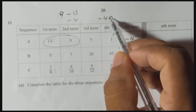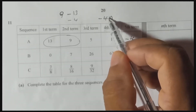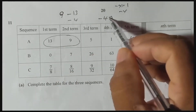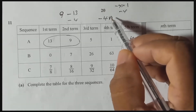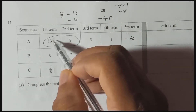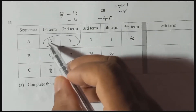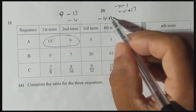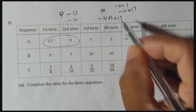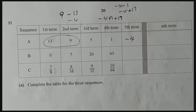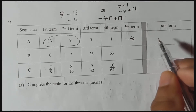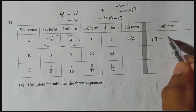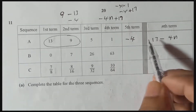We write the common difference with n, that means minus 4n. Replace n with 1: minus 4 times 1 is minus 4. Now, minus 4 plus what gives 13? It should be plus 17. That's the idea — we should add 17. So for minus 4n, we put plus 17, giving us minus 4n plus 17, or we can write it as 17 minus 4n.